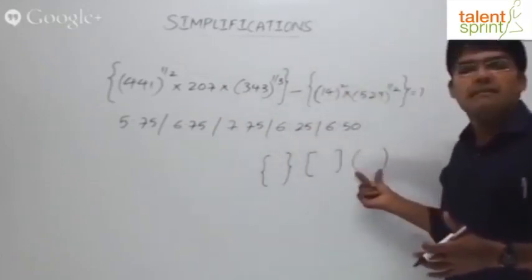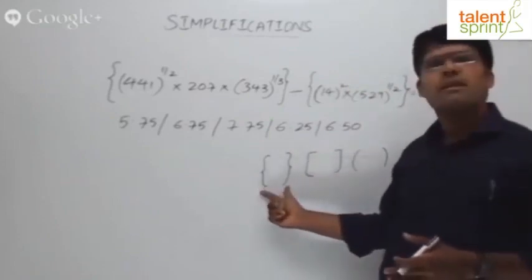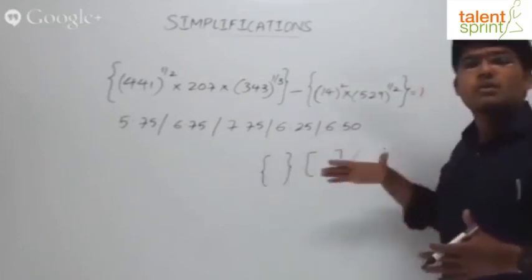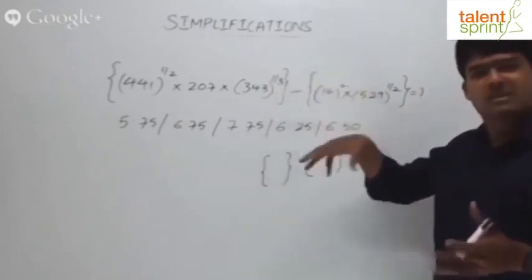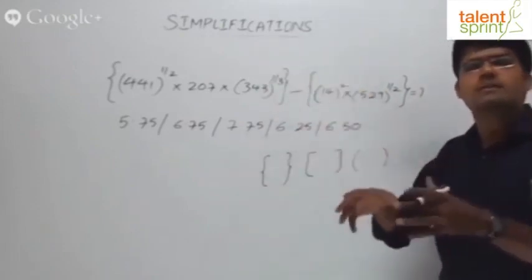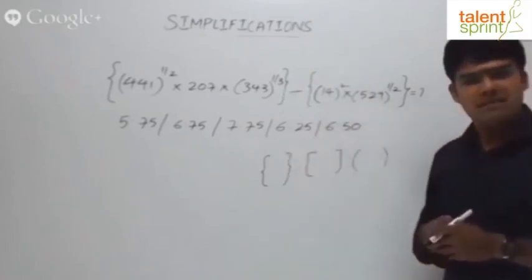The hierarchy is: always simplify this kind of bracket first, then go for square ones, then flower ones. But you need not memorize this. Just remember, whatever is within the brackets, simplify and keep moving outwards, and you will get the right answer.